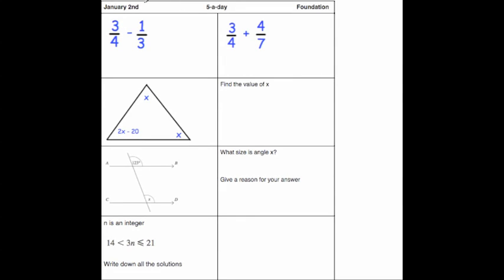So here's the solutions for the January 2nd 5-a-day foundation. The first question is 3 quarters subtract 1 third.